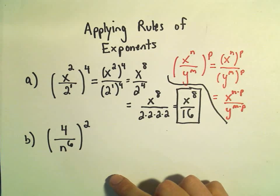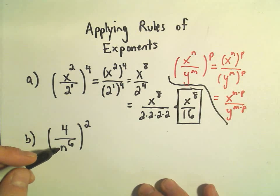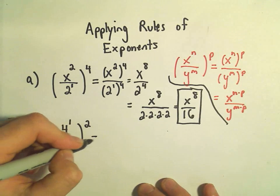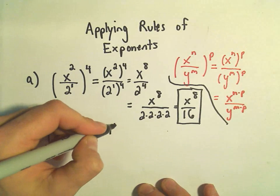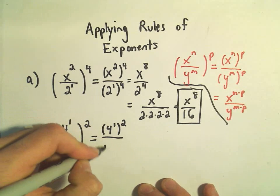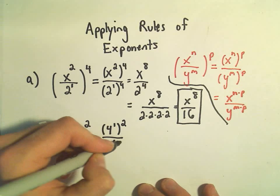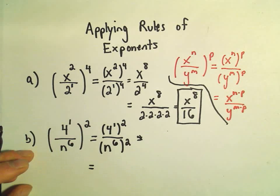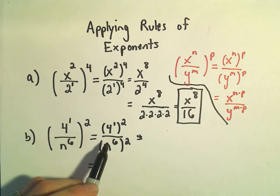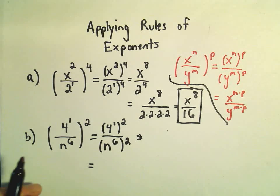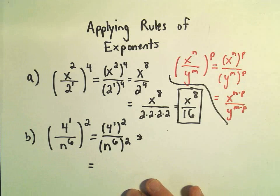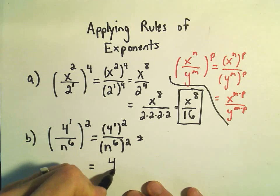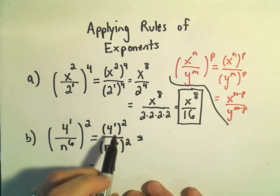We can do the same thing here with our second example. We have 4 over n to the sixth, all being squared. I'm going to stick an exponent in there. We can write that as 4 to the first squared over n to the sixth squared. When you get more comfortable with these, you can actually skip this step. But at the beginning, it's certainly a good idea to write things out. Always write things out when you're unsure — it's just good form and it keeps you from making so many mistakes.